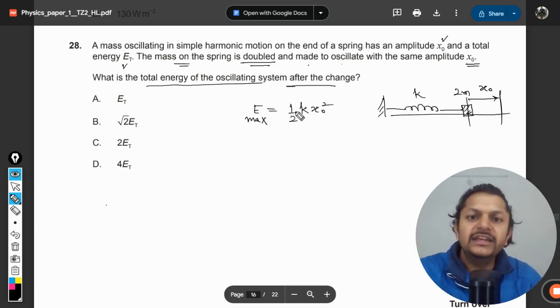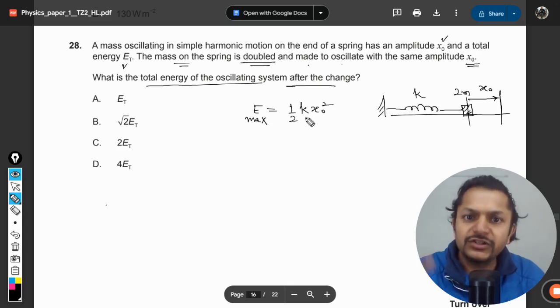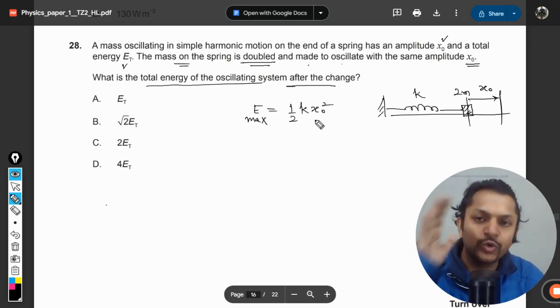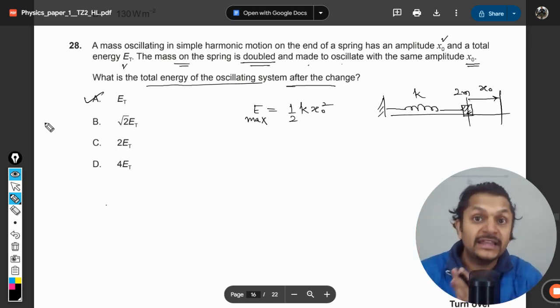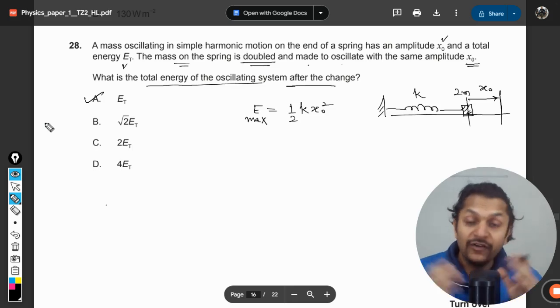Clearly ½k, which is constant, x₀ is also constant, so energy contained in the spring does not change. So clearly our answer is A in this question: ½k·x₀².